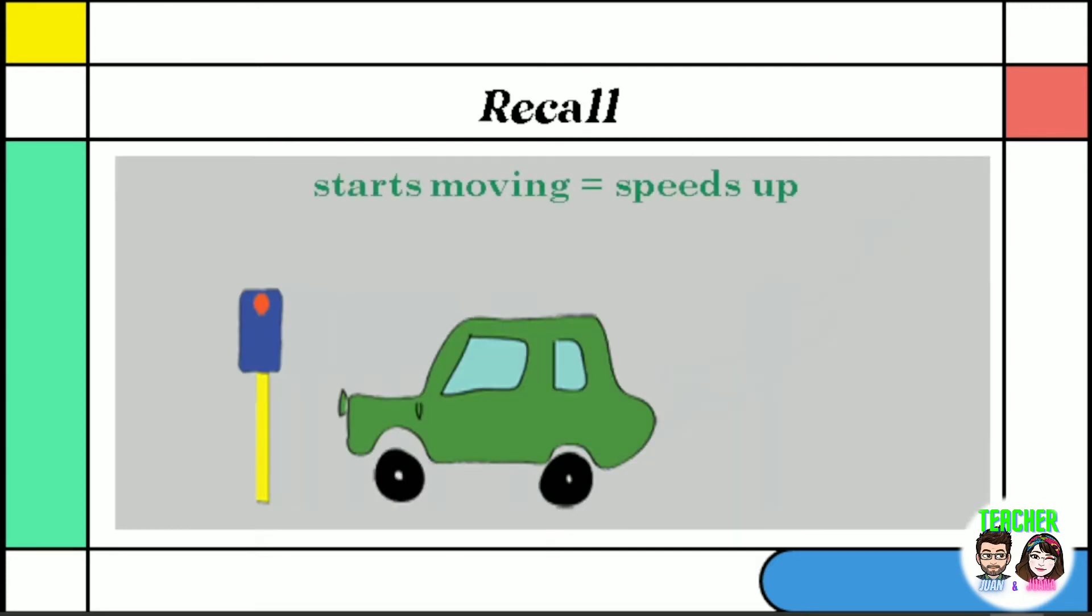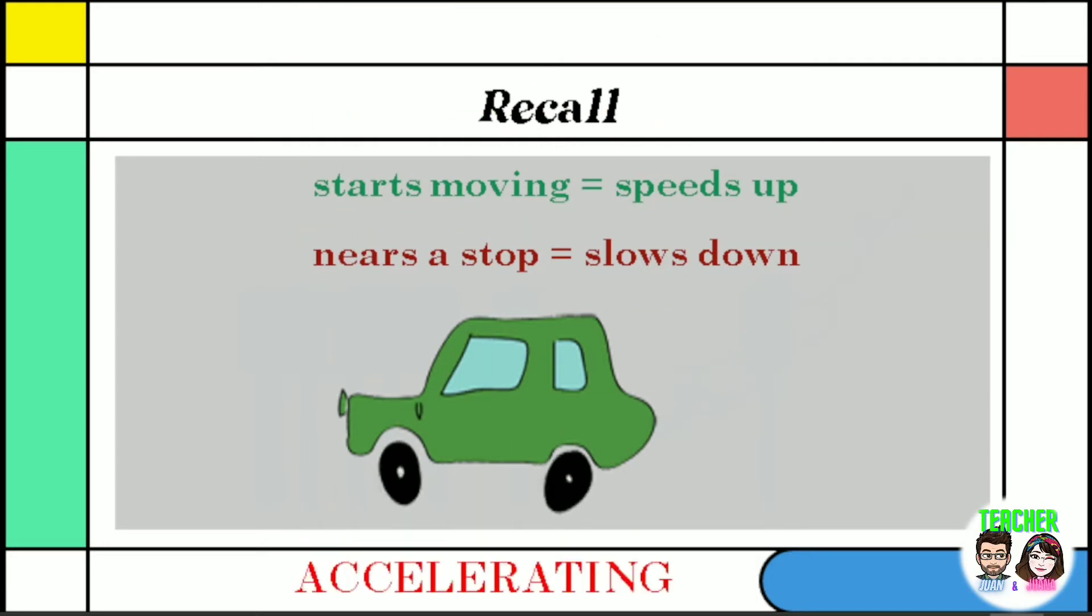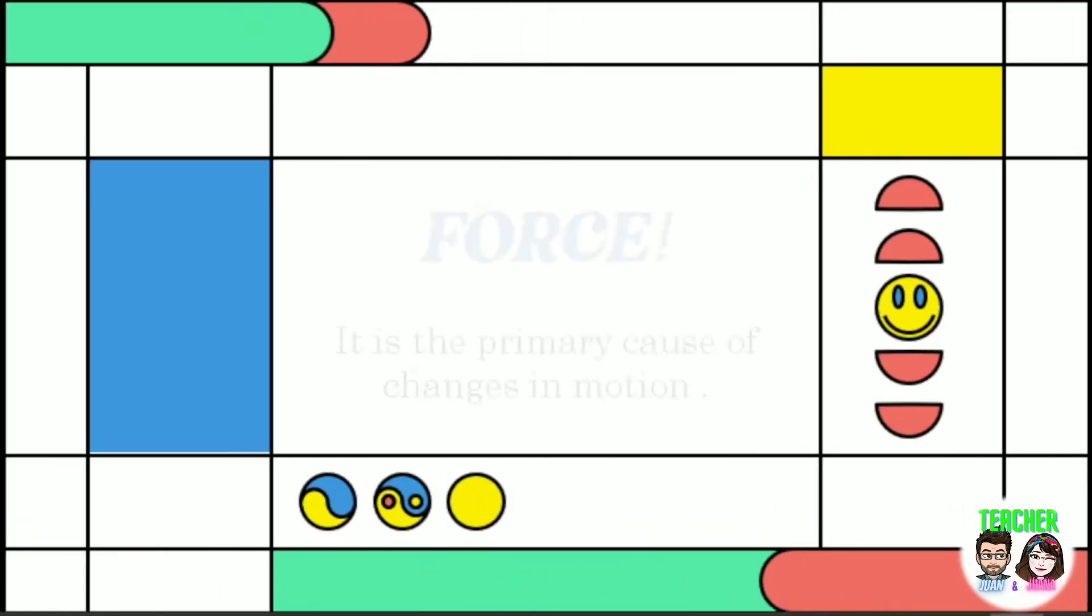Let's say, when a jeepney starts moving, it speeds up. When a jeepney nears a stop sign, it slows down. The jeepney is covering different displacements at equal time intervals and hence it is not moving at a uniform velocity. In other words, the jeepney is accelerating. Most of the motions we come across in our daily life are non-uniform and the primary cause of changes in motion is force.